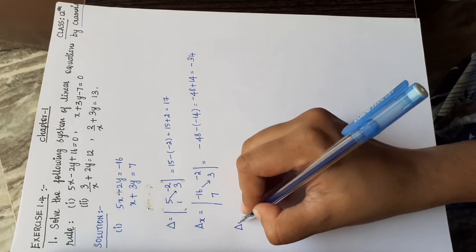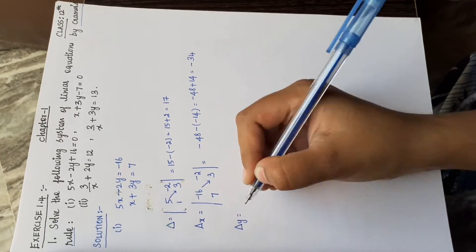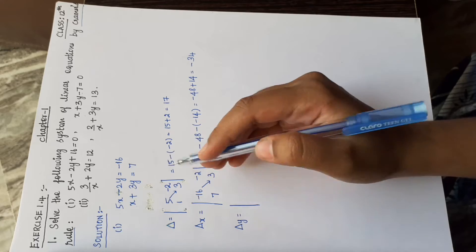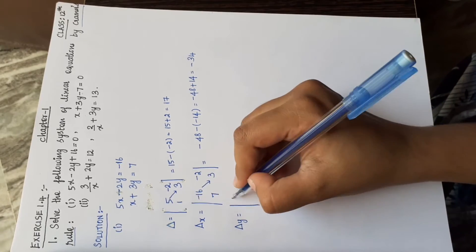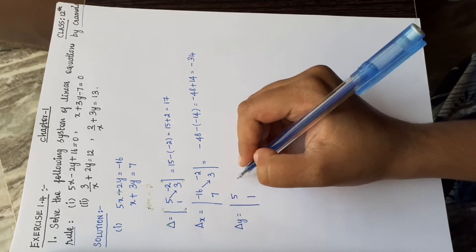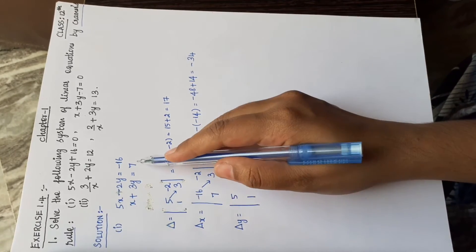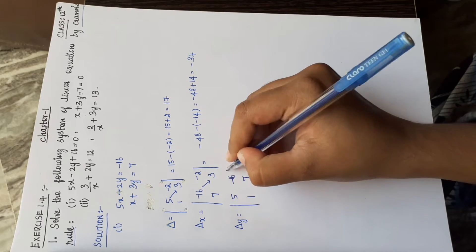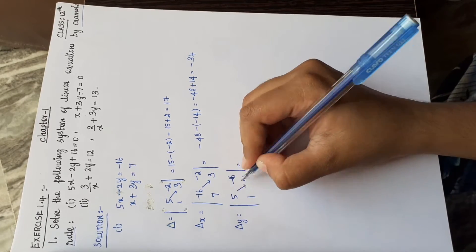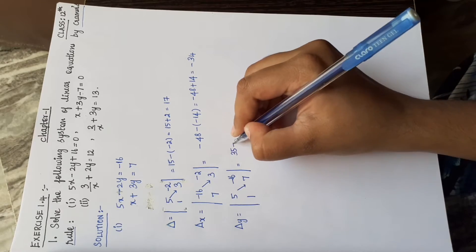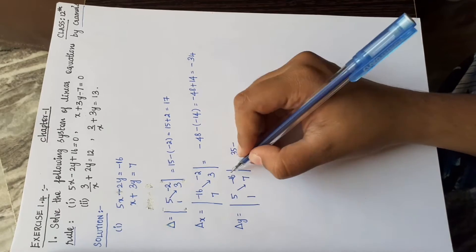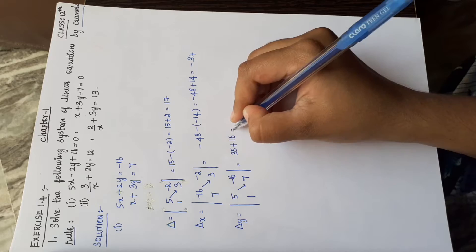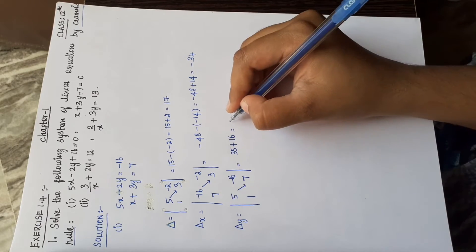Now find delta y. Keep the first column as [5; 1] and replace the second column with the constant terms [-16; 7]. Delta y = (5×7) minus (1×(-16)) = 35 plus 16 = 51.